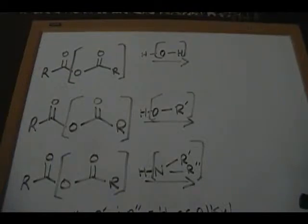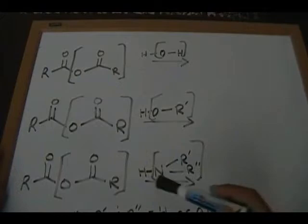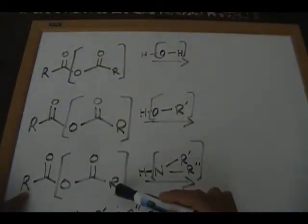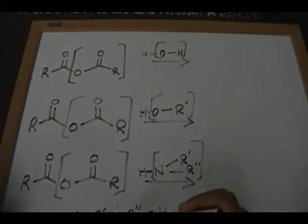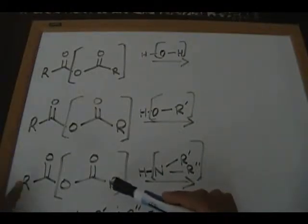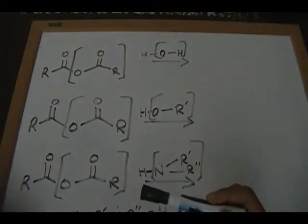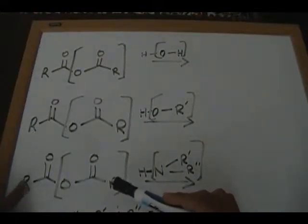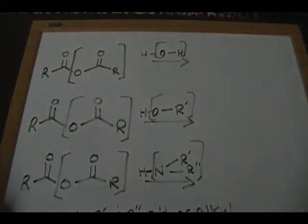There are two different types of anhydrides: those that are symmetrical and those that are unsymmetrical. A symmetrical anhydride will have carbon groups that are exactly the same — these R groups will be the same. Unsymmetrical anhydrides will have carbon groups that are not the same. For example, acetic anhydride is symmetrical with a methyl group on each side, whereas an unsymmetrical anhydride would have a methyl group on one side and an ethyl group on the other. I'll be specifically focusing on symmetrical anhydrides because they make the discussion much easier.